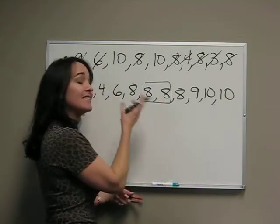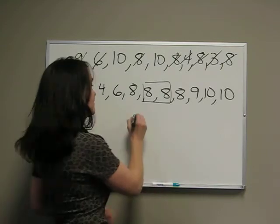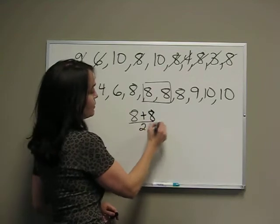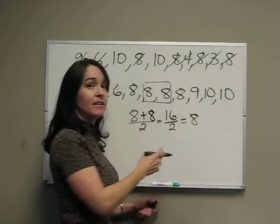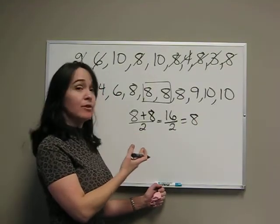To find the center, what we're going to do is just take the average of those two numbers. So we say 8 plus 8, our two numbers, divided by 2. That's 16 divided by 2 is 8, exactly what we were expecting, but this is what we would do if these were two different numbers.